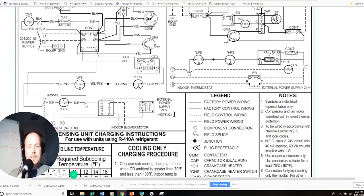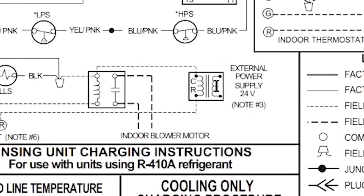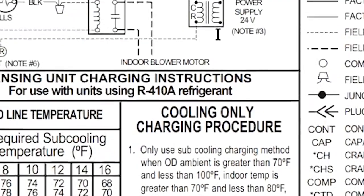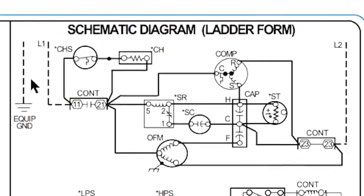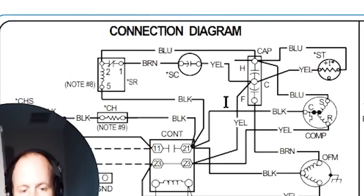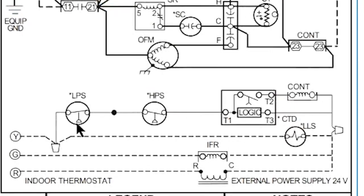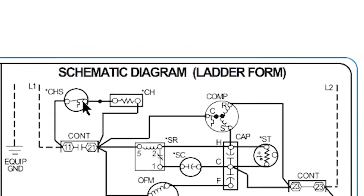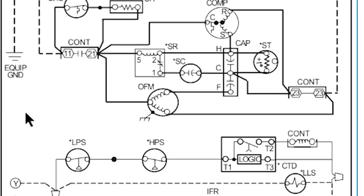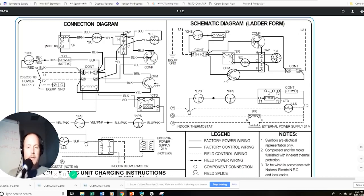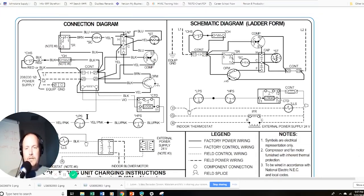One more thing: an iron core transformer looks like this — another symbol you'll see a lot in the field. So to summarize the basics: transformers, contacts, inductive coils, heaters, capacitors, normally closed switches, pressure-activated switches with bellows, and temperature-activated switches. When you get into more complex equipment, you'll rely more on wire numbers to trace circuits — but start small, work your way up, take it slow, and you'll get better over time. I'm Brian with HVAC School — thanks for watching.